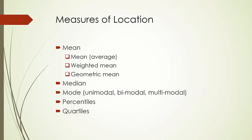People often like to have datasets evenly divided into four parts. Thus comes the concept of quartiles. We usually look at the first, second, and third quartiles, or Q1, Q2, and Q3. The 0th and 4th quartiles are trivial, just like the 0th and 100th percentiles. The first quartile is nothing but the 25th percentile, the second quartile is the 50th percentile or median, and the third quartile is the 75th percentile.